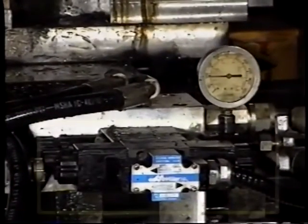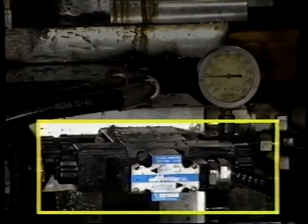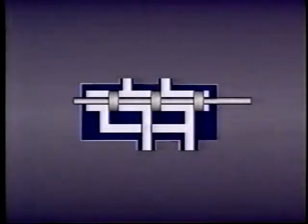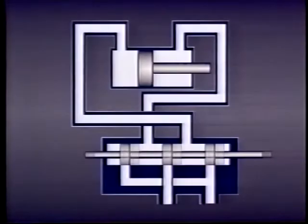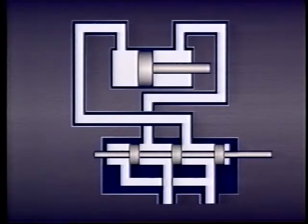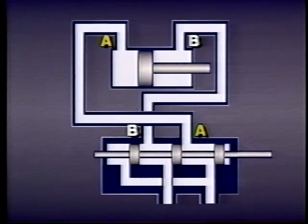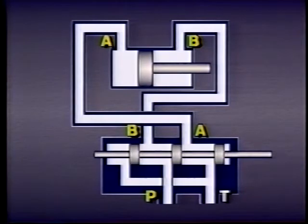To control which direction the piston moves, we use a directional control valve. It works by determining which port on the double acting cylinder is used as an inlet port and which is used as an outlet port. A typical directional control valve consists of a valve body with four ports and a sliding spool. The spool connects and disconnects passages within the valve body. For ease of identification, we'll label the two top ports A and B. Port A on the valve is connected to port A on the cylinder and port B on the valve is connected to port B on the cylinder. We'll label the other two ports on the valve P for pump and T for tank.